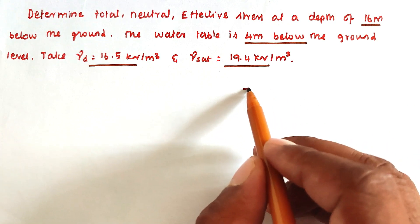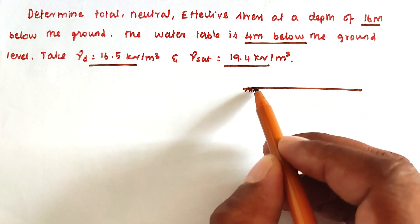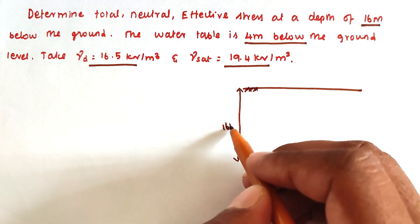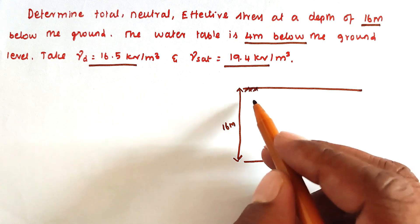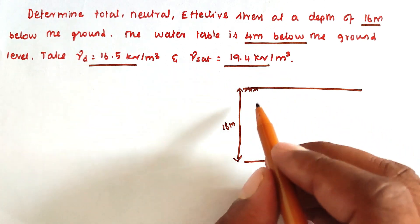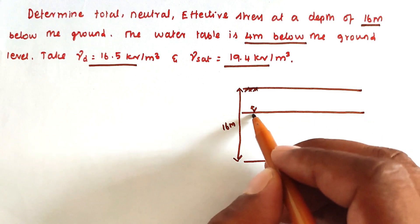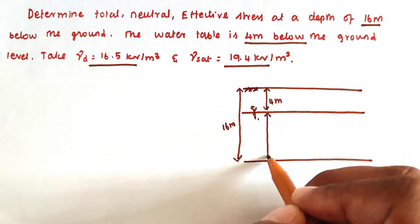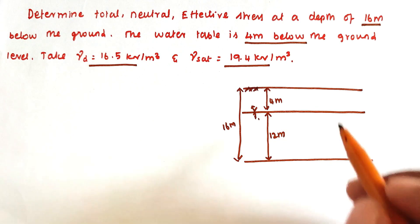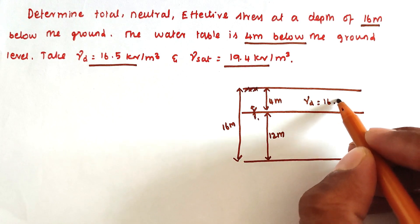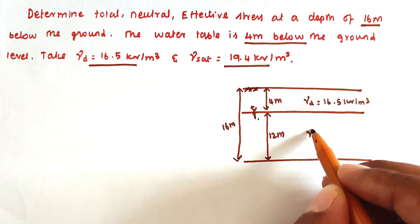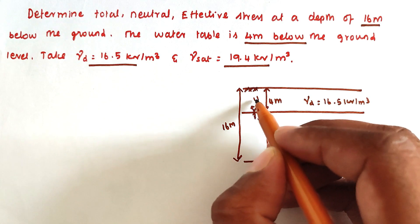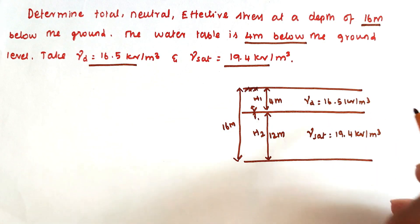We draw the soil layers. This is the ground surface, and 16 meters below is the point of interest. The water table is 4 meters below the ground surface, so h1 = 4 m and h2 = 12 m. Above the water table, gamma d = 16.5 kN/m³; below, gamma saturation = 19.4 kN/m³. We label these as gamma 1 and gamma 2.